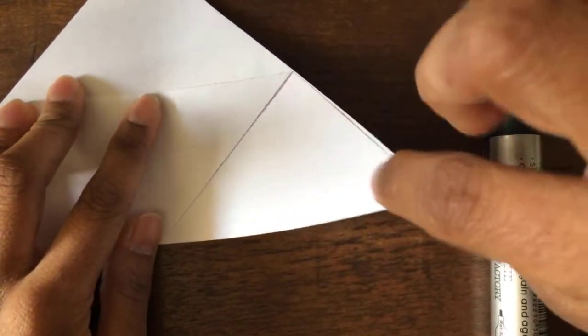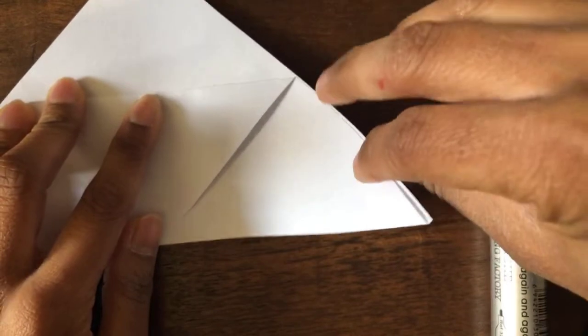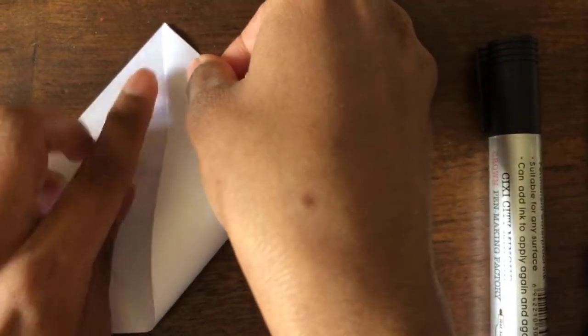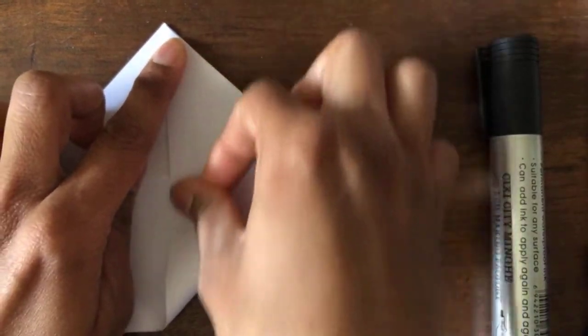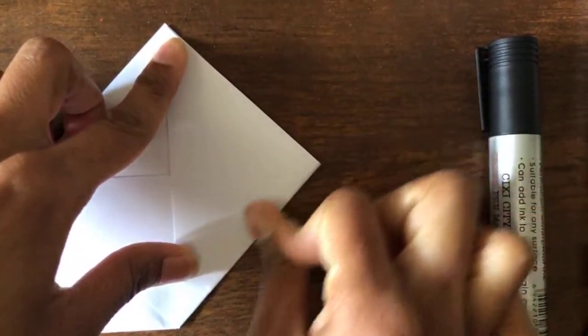And then you will take one side, this corner, and you will put it above your paper, to the top of the paper. And you will make a crease here.